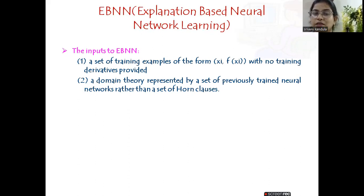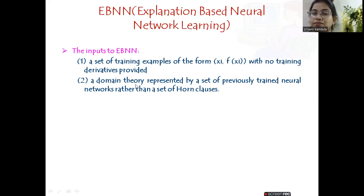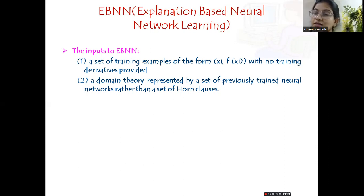In the EBNN algorithm, we provide two inputs. One is a set of training examples of the form x_i comma f(x_i), with no training derivatives. Similar to tangent prop, we are not supplying the derivative — only the training example x_i comma target function f(x_i). We are also supplying a domain theory, represented as a set of previously trained neural networks, not Horn clauses. In the KBNN algorithm we provided Horn clauses, but here we provide already trained neural networks, so we already have the trained base and work on top of it.